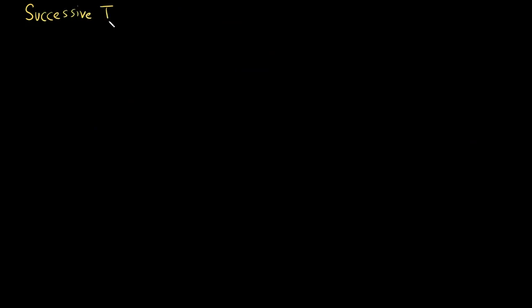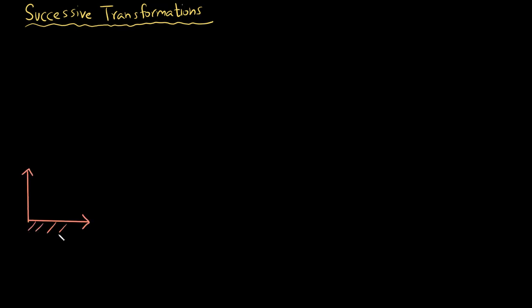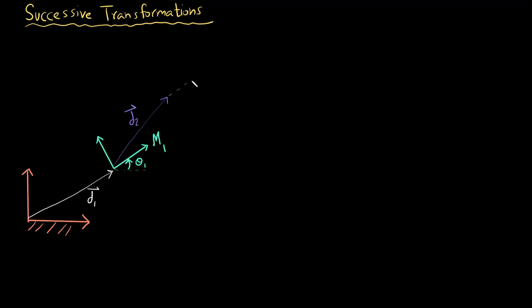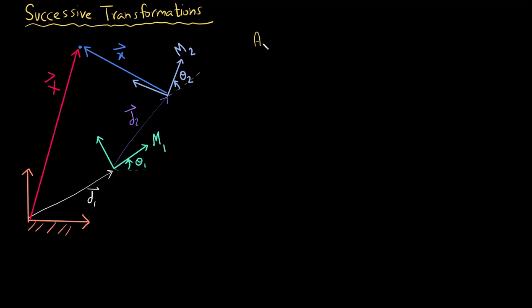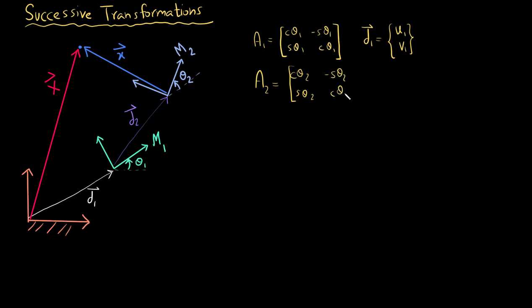Now let us see how we can use homogeneous transformation matrices for successive transformations. Here a fixed frame is drawn, and there is a displacement by vector d1 which takes the fixed frame to the first moving frame m1, rotated by angle theta1. Then there is a displacement d2 which displaces m1 to another location and rotates it by theta2, giving the final frame m2. The point is expressed in m2, and we want it expressed in the fixed frame.